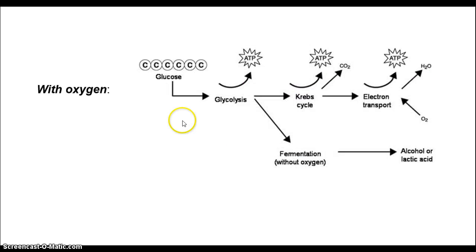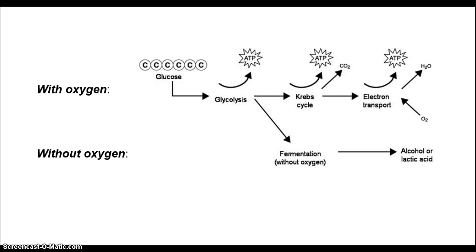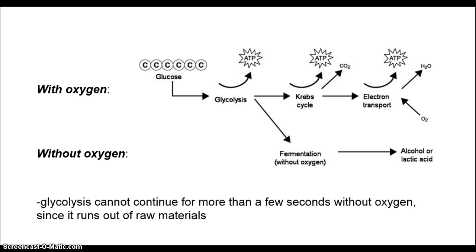With oxygen, glucose can be broken down in a series of steps, giving you ATP along each stage, as well as waste products of CO2 and water. But if oxygen is not present, then you need to generate energy and other materials for the cell in a different way. Cells resort to a process of anaerobic respiration, also known as fermentation, when oxygen is not present. This aerobic process cannot continue for long if oxygen is not present, and therefore the cell takes drastic action to continue its life cycle.